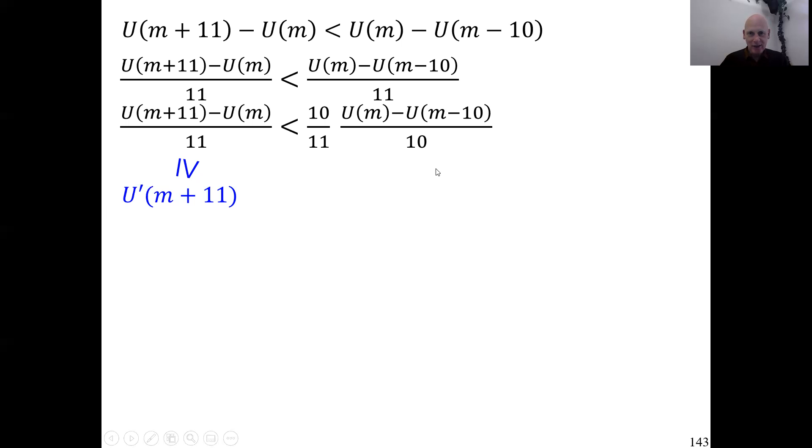Now, I turn to something similar here on the right-hand side. This fraction here is the average derivative of utility over the interval m minus 10 up to m. And because of concavity, I can write what I do here. Here, I take the left endpoint of that interval. There, the derivative is at least as big as it is at all the points in the interval. So it's surely at least as big as the average derivative. Now, I put these things together using transitivity of inequality. What follows is that the derivative at m plus 11 is less than 10 over 11 times the derivative at m minus 10.